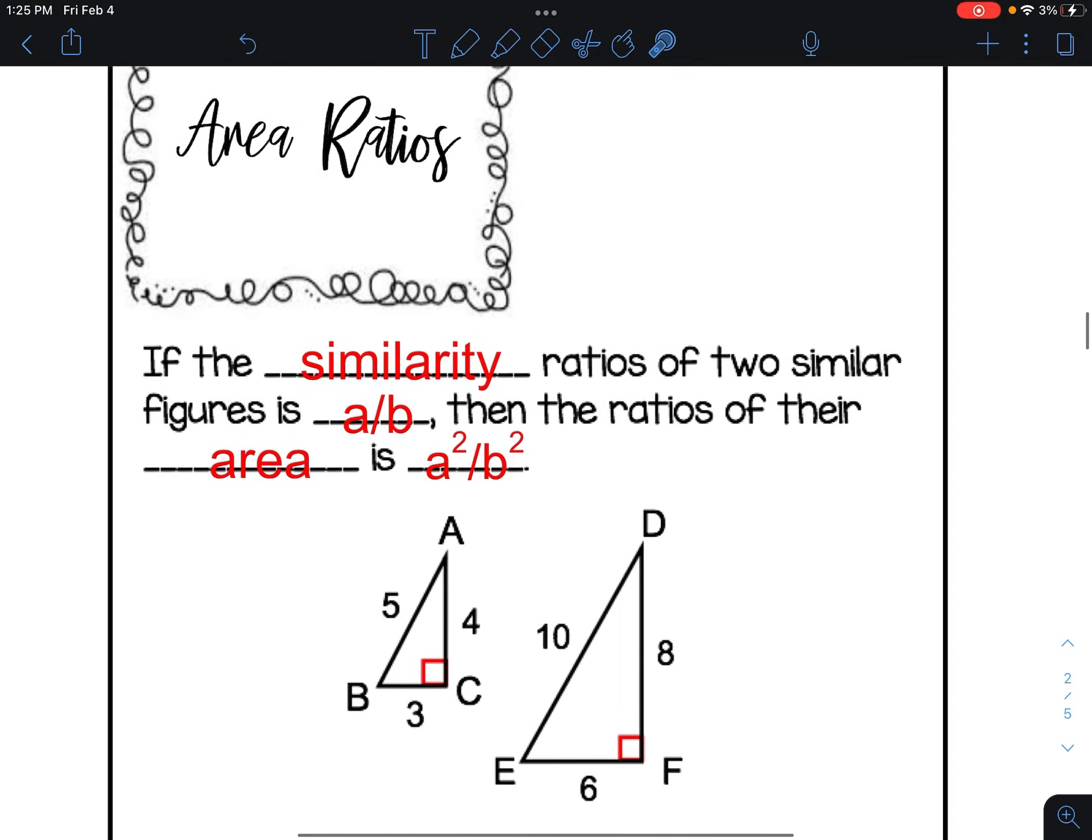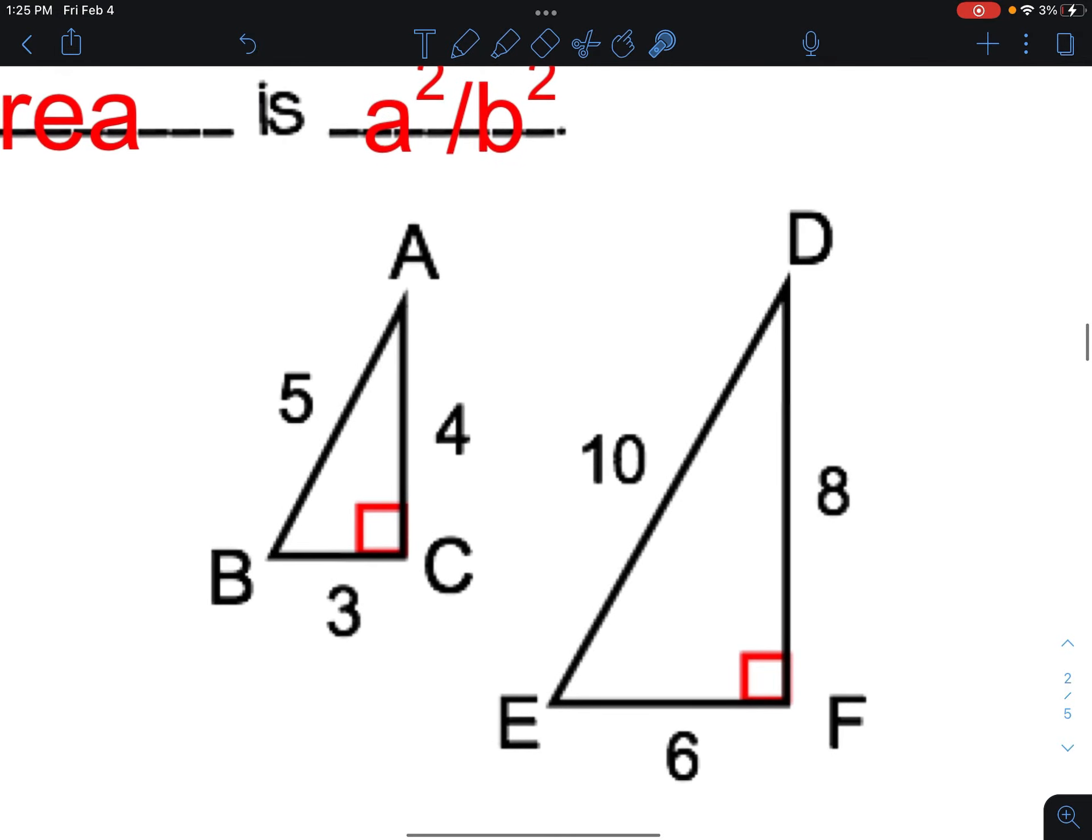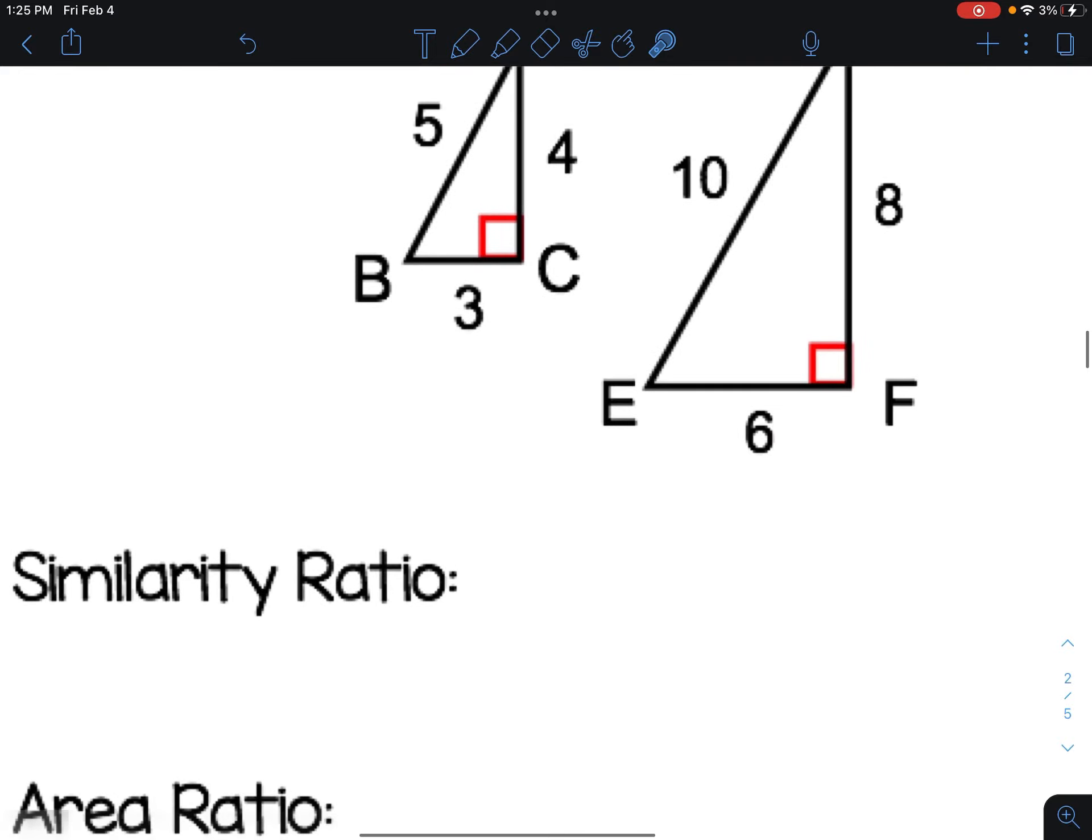Now, the area ratio, a little different. Area, we said our similarity ratio, the same two triangles, so it's 1 to 2.